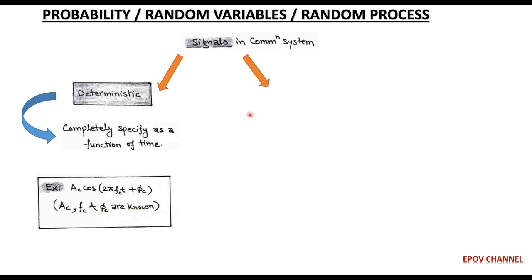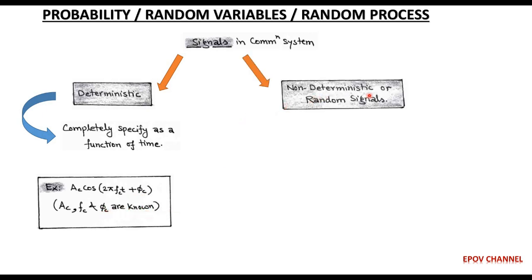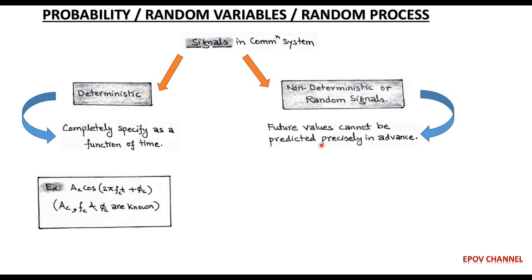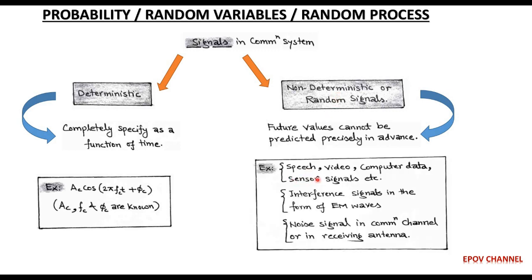Another type is called non-deterministic or random signals. These random signals cannot be represented mathematically, and their future values cannot be predicted in advance very precisely. Examples include speech, video signals, computer data, and sensor signals.